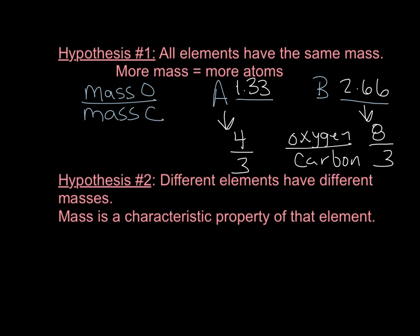According to hypothesis 1, if this was 1.33 oxygen to carbon, we put that in an improper fraction: 1.33 is 4 thirds, or 4 oxygens for every 3 carbons, if they all had the same mass. And B would be 8 thirds — 2.66 is 8 thirds, or 8 oxygens for every 3 carbons. That would lead us to say the formula for A is C3O4, and this one would be C3O8.